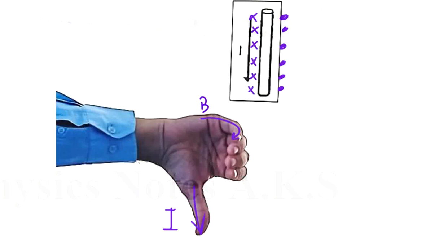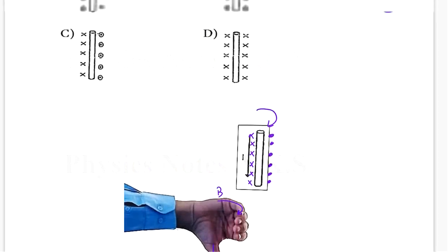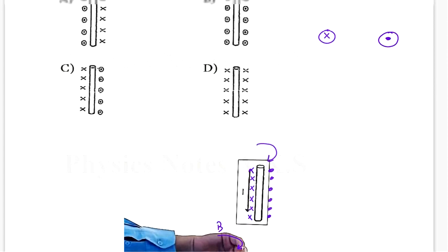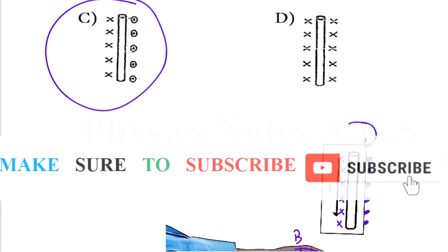That's how the magnetic field will be. I'll try to draw it like this, I don't know if it's clear, but basically it will move out of the right side and enters in the left side. So which option is correct? As you can see, it is C, it's the correct option. I hope it's clear.